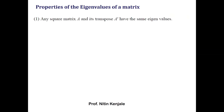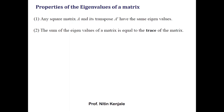The very first property states that any square matrix A and its transpose A' will have the same eigenvalues. It means eigenvalues of matrix A and its transpose are the same.